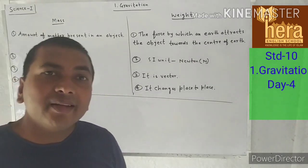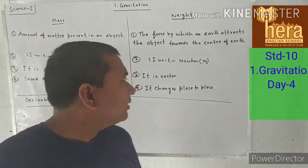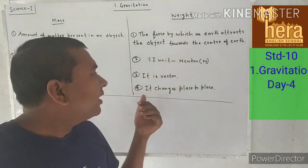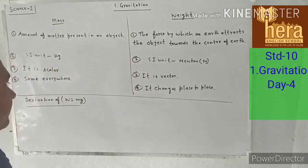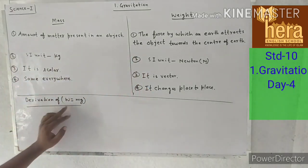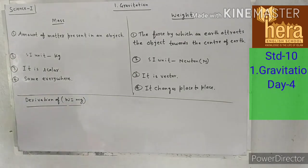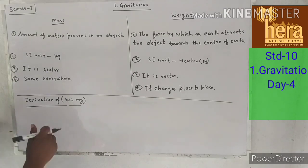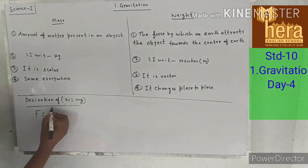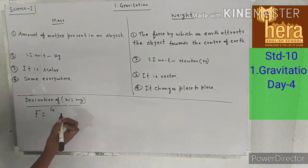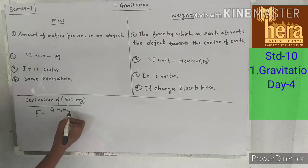Mass remains the same everywhere, but weight changes place to place. The reason is, according to Newton's universal law of gravitation, F is equal to G M₁ M₂ upon D square or R square.